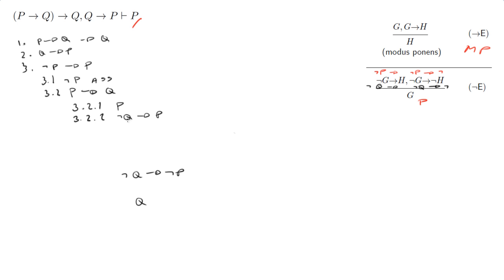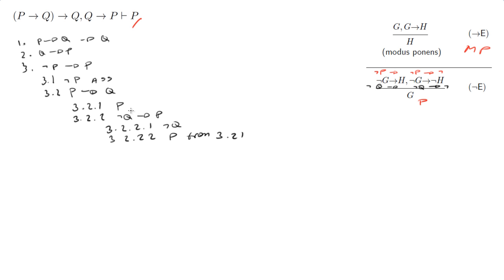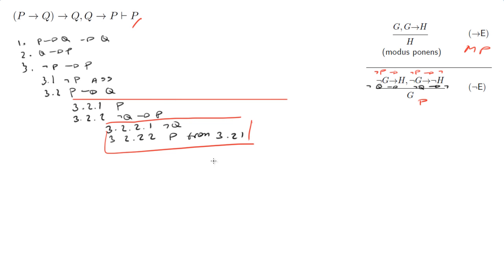So 3.2.2.2.1: not Q is assumption. Then 3.2.2.2: P from 3.2.1. Then I can close this sub-computation box. Here we want to prove Q — and we are done.